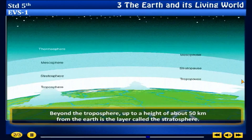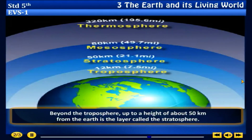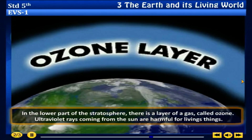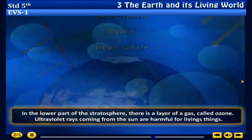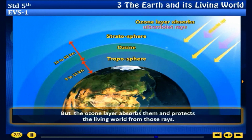Beyond the troposphere, up to a height of about 50 km from the earth, is the layer called the stratosphere. In the lower part of the stratosphere there is a layer of gas called ozone. Ultraviolet rays coming from the sun are harmful for living things, but the ozone layer absorbs them and protects the living world from those rays.